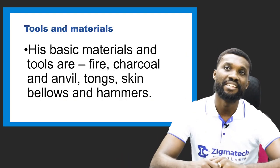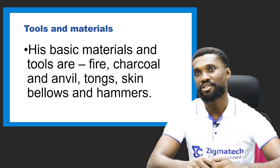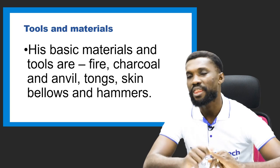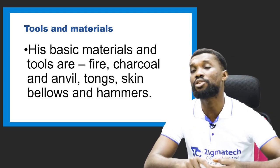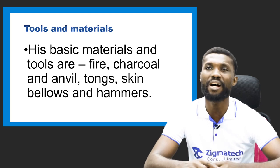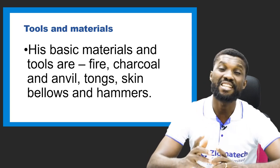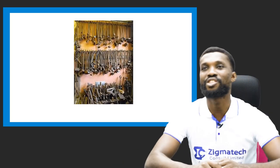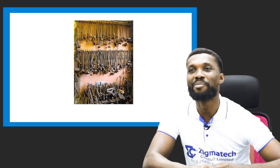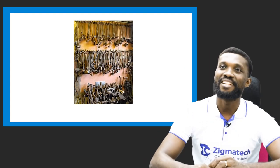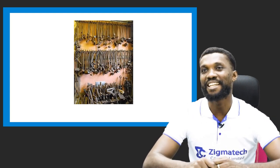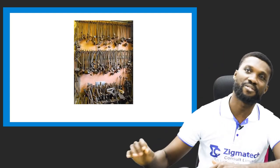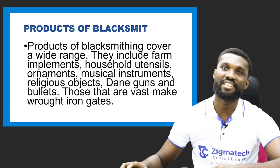Now let's look at the tools and materials needed for a blacksmith. The basic materials and tools are: fire, charcoal, the anvil, the tongs, the skin blower, and the hammer. If you watch, those are some of the tools the blacksmith uses in creating his works — see the different shapes and sizes of objects created by the blacksmith on that wall.